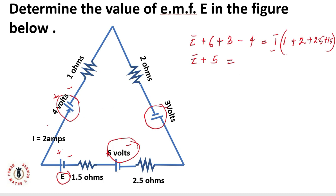My I is given as 2 amps, so I can take 2 amps into 1 plus 2 plus 2.5 plus 1.5. That's 4, plus 1 is 5, plus 2 is 7.